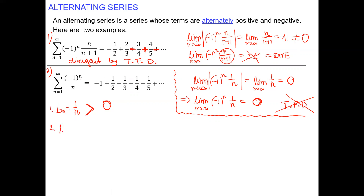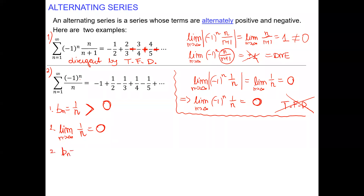Also, these terms are approaching zero — they're getting smaller and approaching zero. The limit at infinity is zero. And we also have to make sure that b sub n is decreasing. For b sub n equals one over n: it's positive, the limit is zero, and it's decreasing.